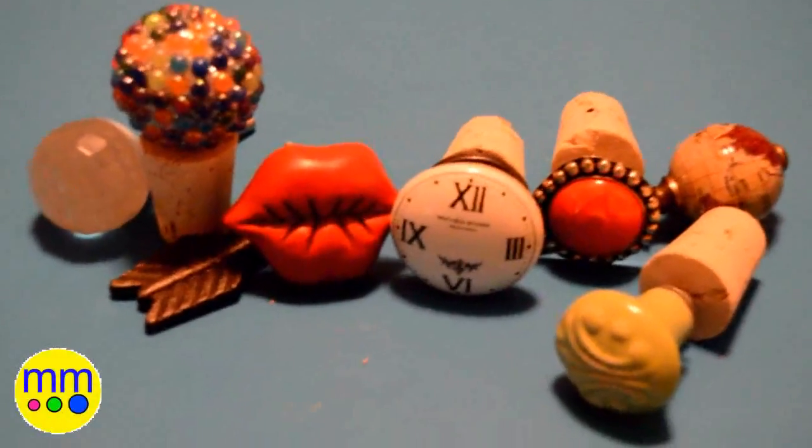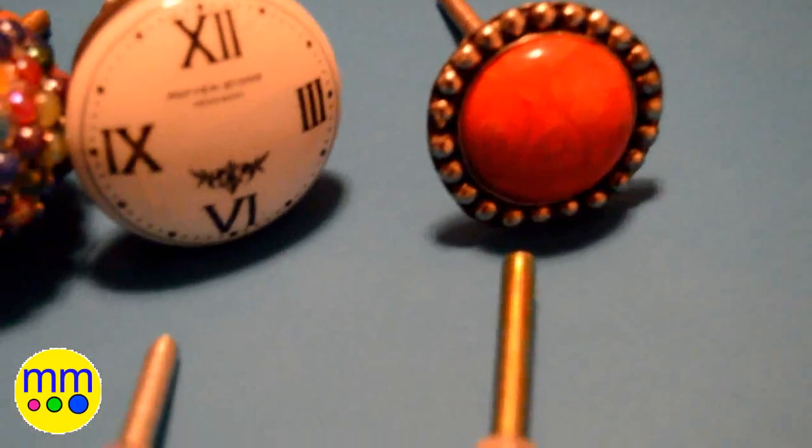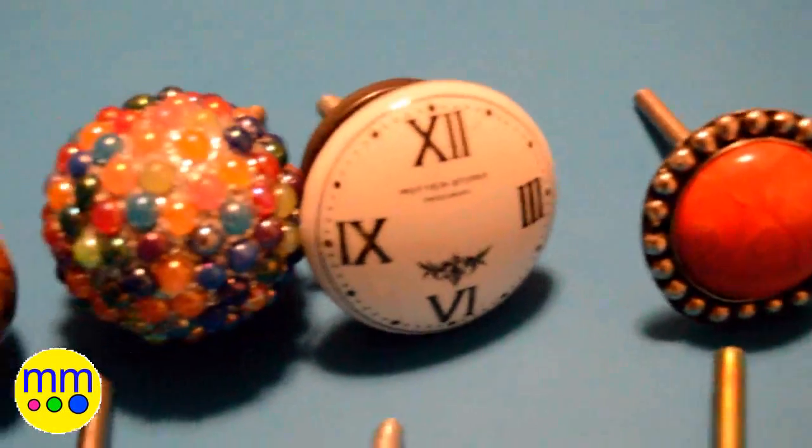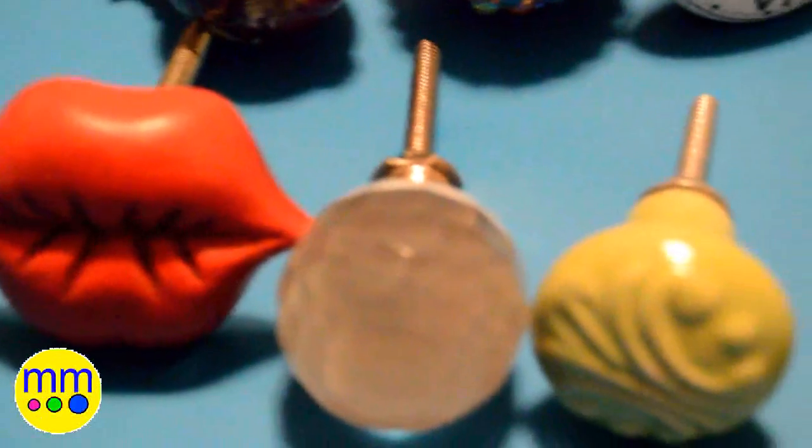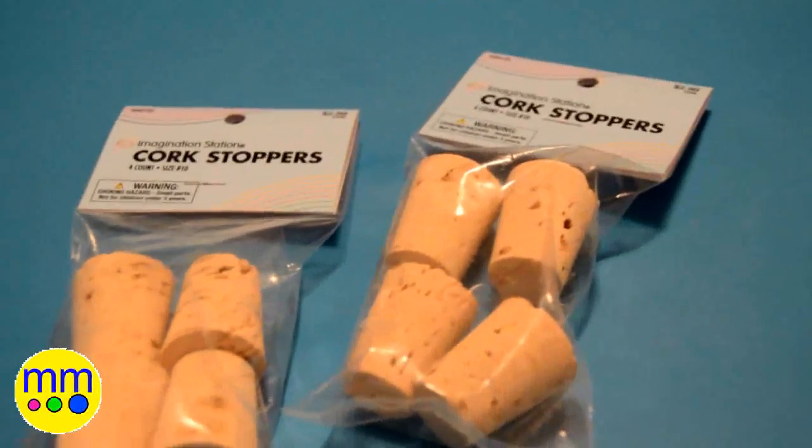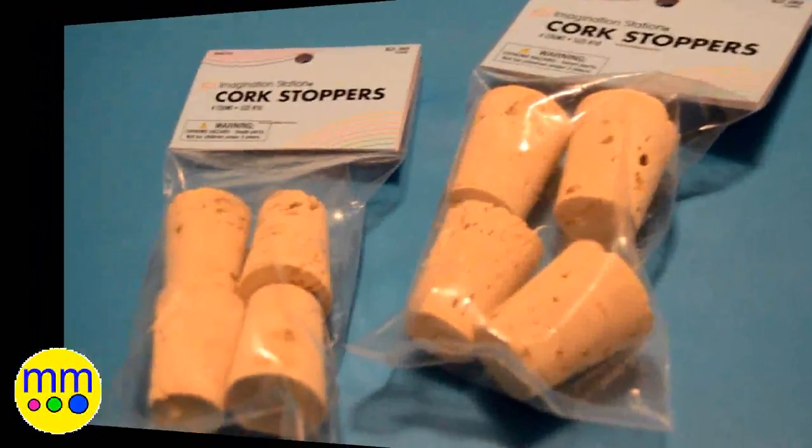In today's video, I'm going to show you how to make these beautiful wine stoppers. You'll only need two items to create this project: decorative knobs and cork stoppers, both can be purchased at Hobby Lobby.